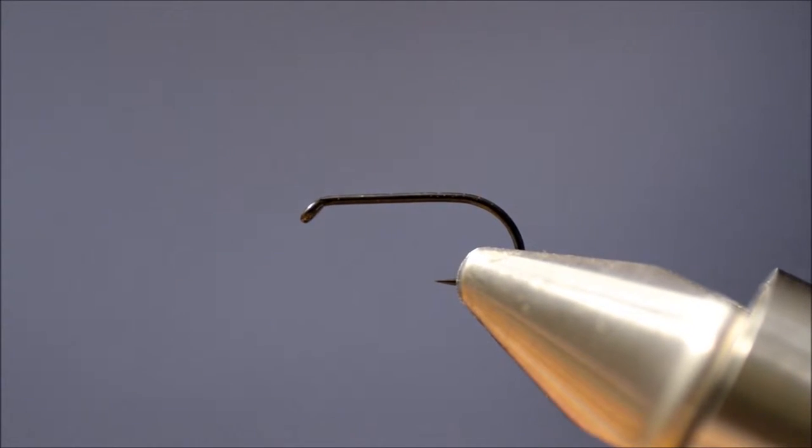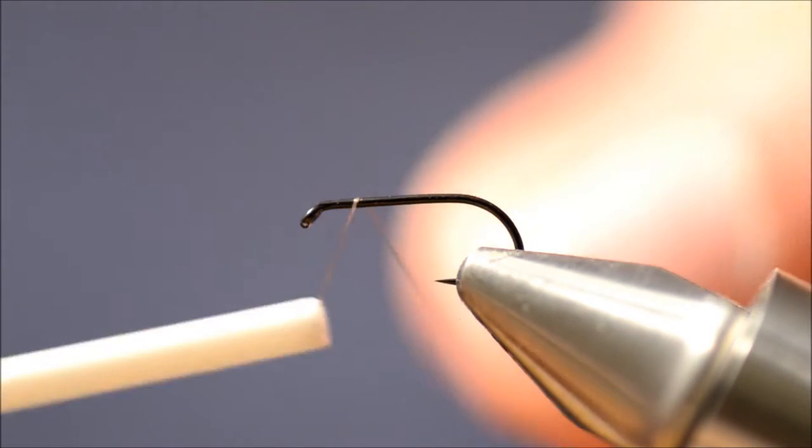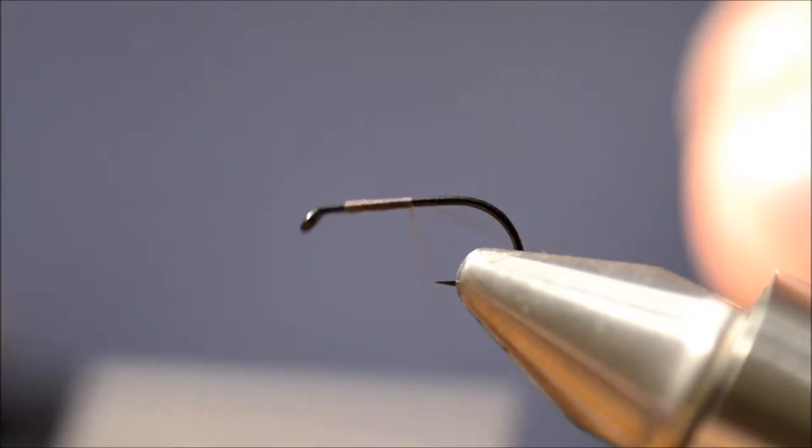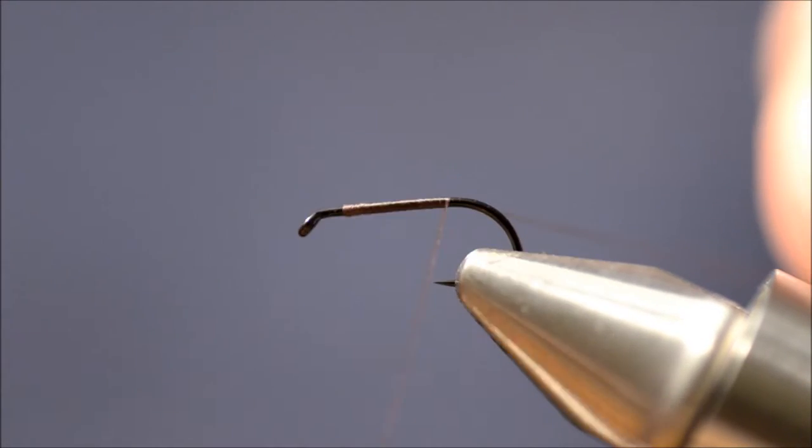Today I'm going to tie the polymer midge, which is a really simple midge cluster imitation. The hook I'm using is a TMC 102Y, size 17.